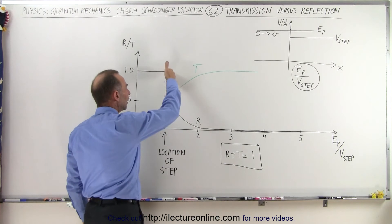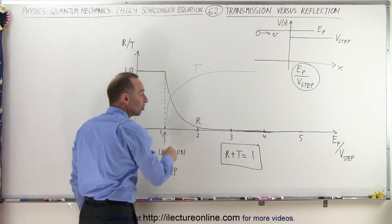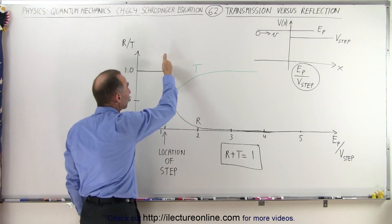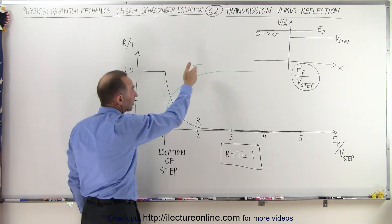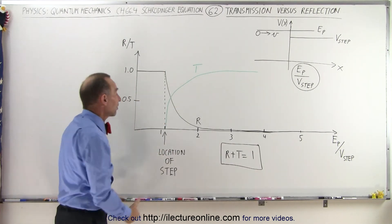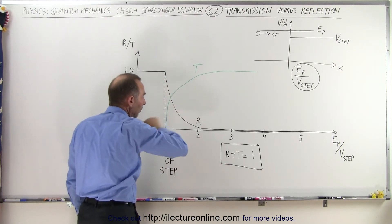At the same token, the amount of particles reflected will rapidly decrease, but it will not be a step function like we would expect that as soon as the energy is greater, the energy of the particle is greater than the energy of the barrier, you would expect all the particles to get past that barrier. But that's not the case. There will be some reflection and that reflection will drop off rather quickly.